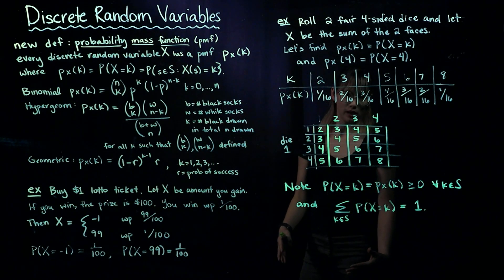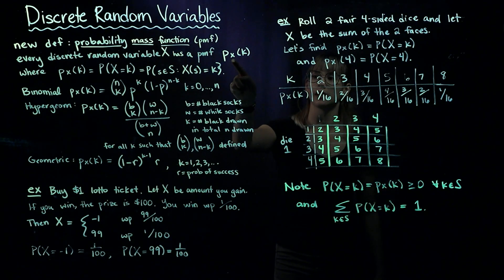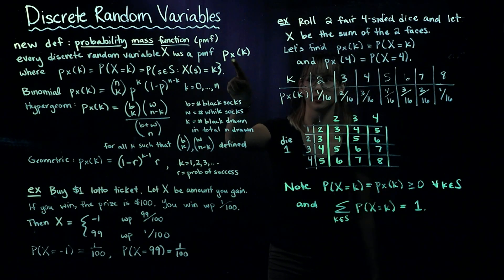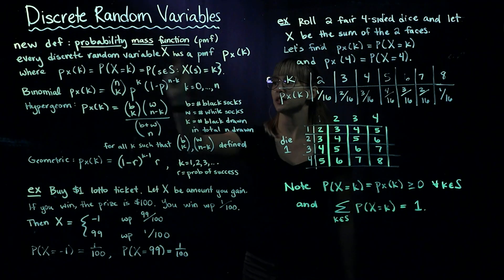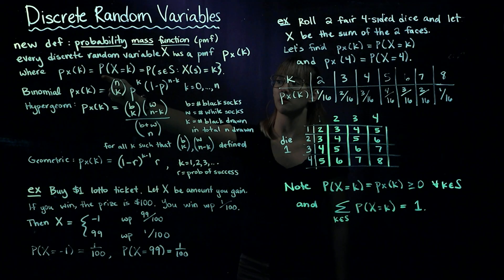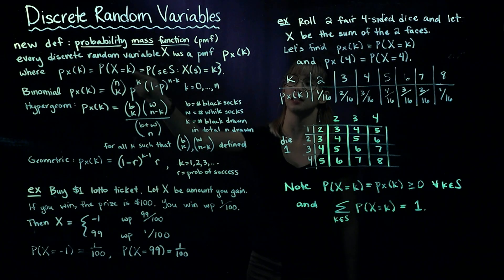We represent it as P subscript X of K, where X is the random variable. This represents the probability that our random variable X equals K.